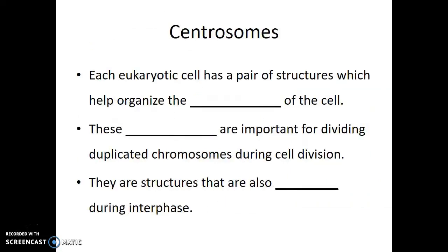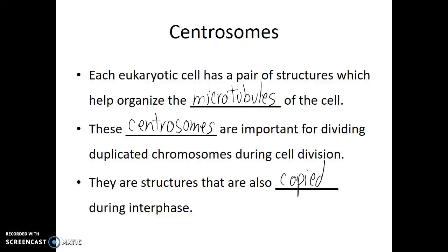The last topic before we discuss cell division is the centrosomes. Each eukaryotic cell has a pair of centrosome structures which help organize the microtubules of the cell body. These centrosomes are important for dividing duplicated chromosomes during cell division, and they are also copied during interphase — during the events that occur before cell division. In our next video, we'll talk about the steps of mitosis, the events of cell division.